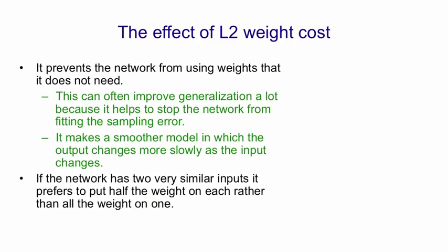So if the network has two very similar inputs, when you put in an L2 weight penalty it prefers to put half the weight on each of those two similar inputs rather than all of the weight on one. If the two inputs are very similar those two networks will produce very similar outputs. But the one with the halved weights will have much less extreme changes in its output when you change the inputs.